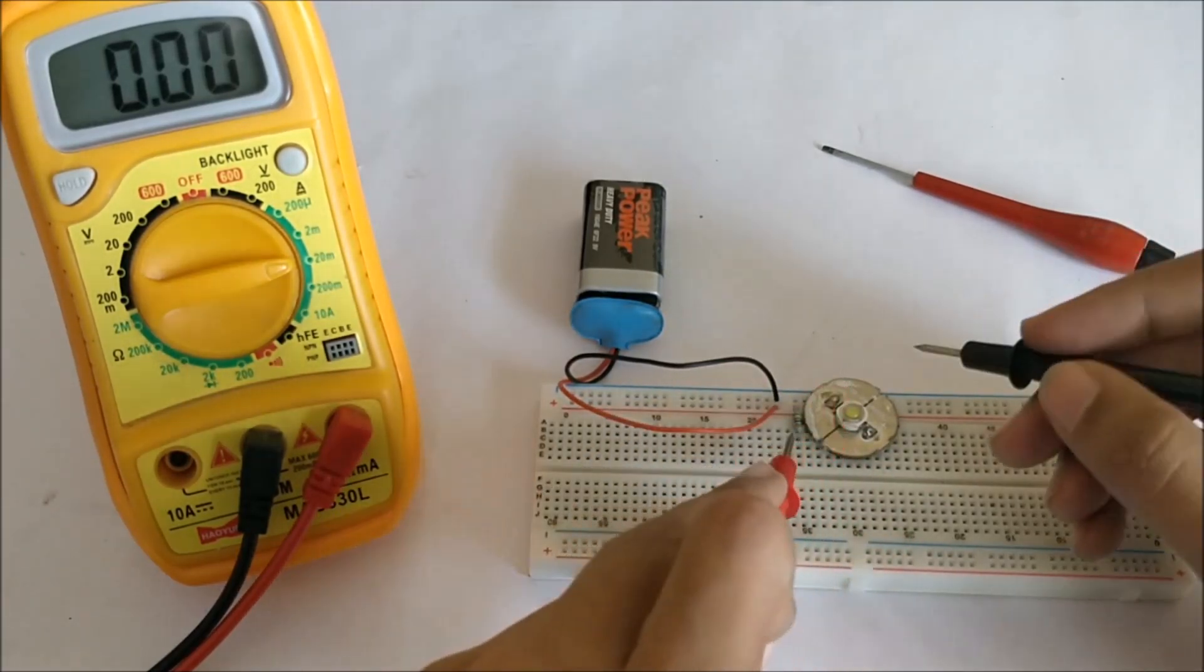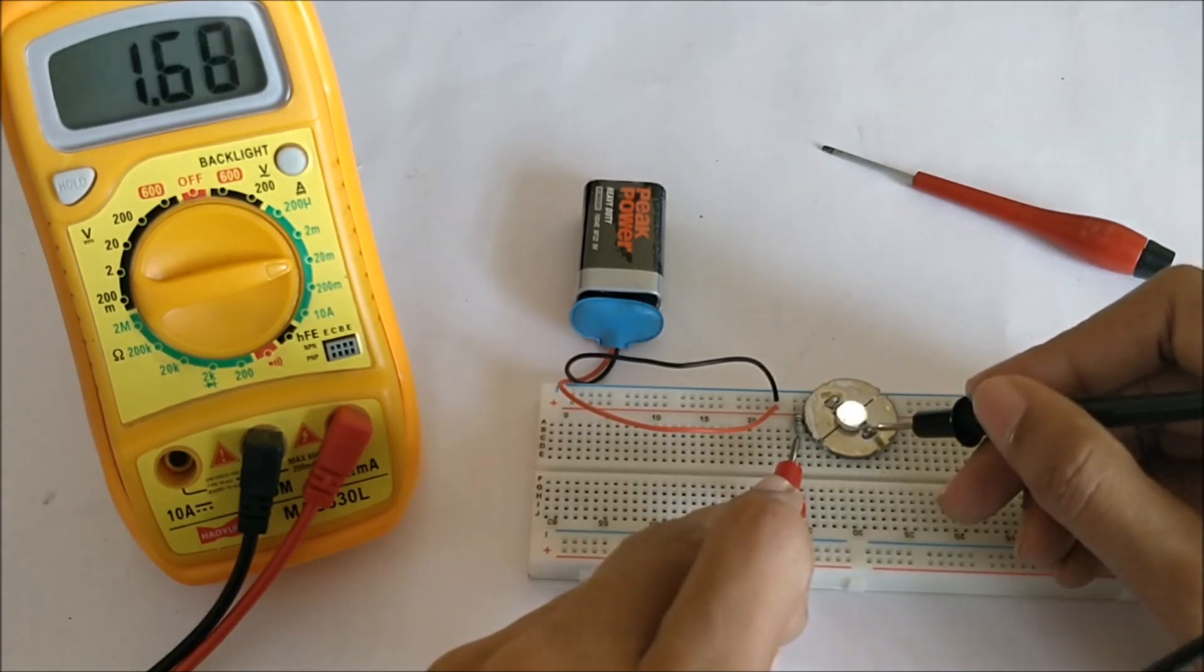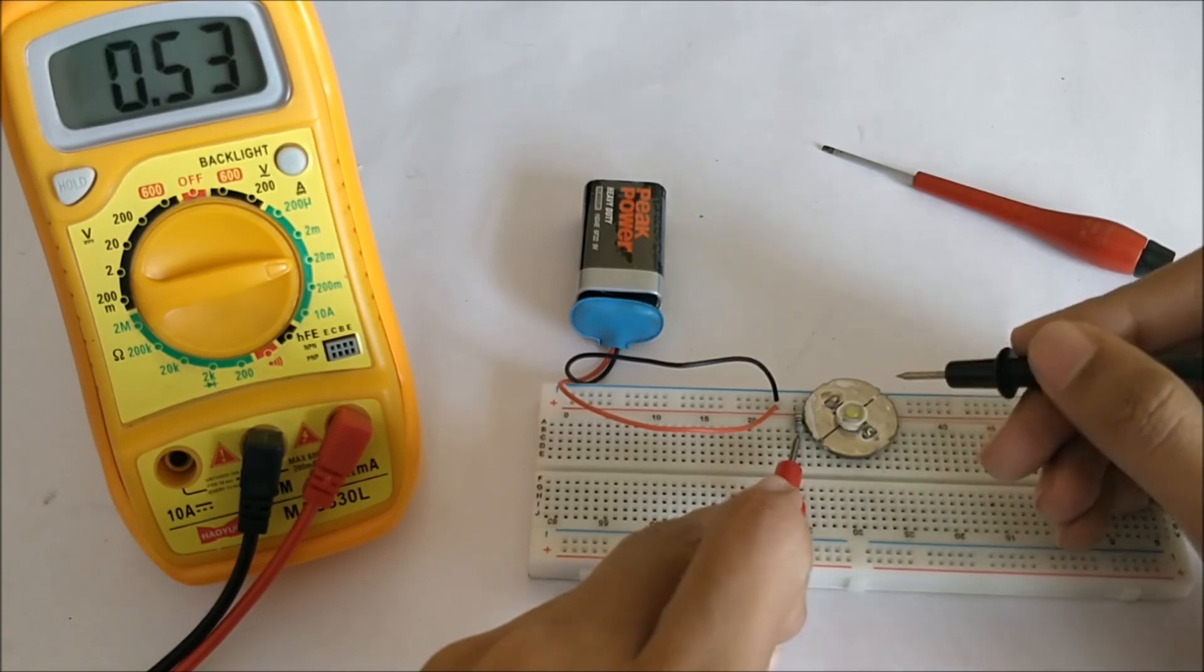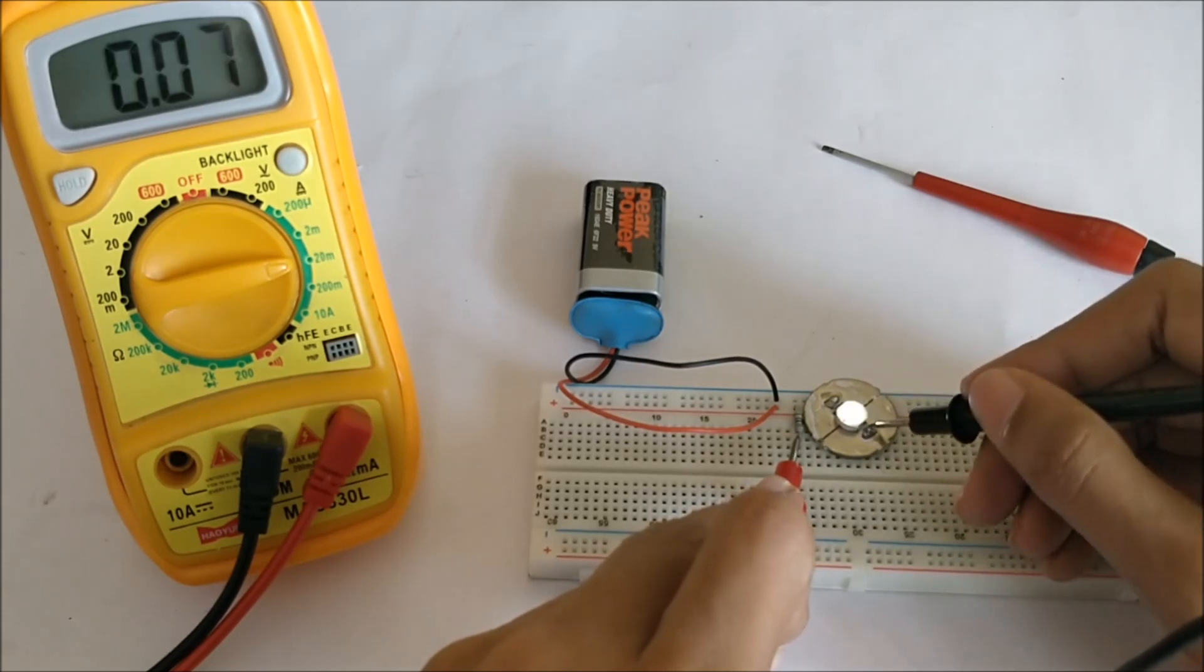Let us place the positive lead to one end of the resistor and the negative here. As we can see, as soon as I touch it, the circuit is complete and the current is flowing through the multimeter now, and it shows 1.65 milliamps. So this LED is currently consuming 1.65 milliamps as you can see here.